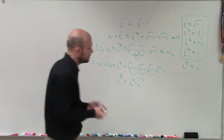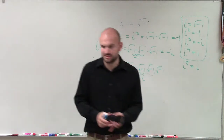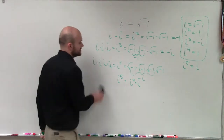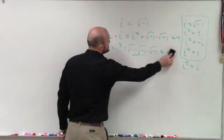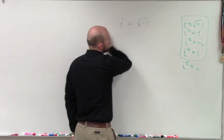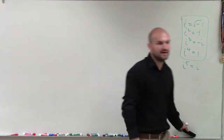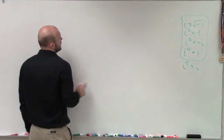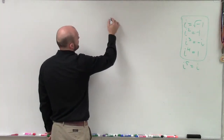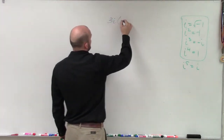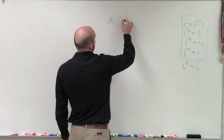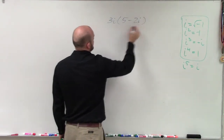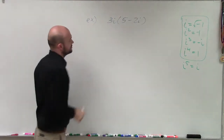Why is that important? When we do operations on complex numbers, we're sometimes going to have to simplify them. I'm going to do two quick problems. First, let's do 3i times the quantity 5 minus 2i, and also 2i plus 1 plus pi times 3 minus pi.